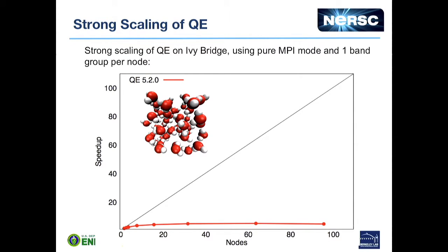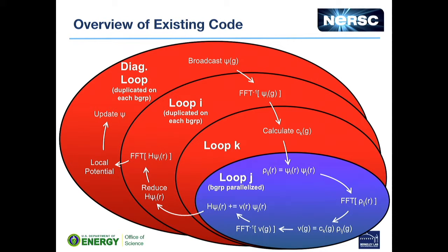That having been said, there are some limitations to the way band group parallelization currently works in Quantum Espresso. For a calculation on 64 water molecules, looking at strong scaling as I use more and more nodes — with one band group per node for all calculations — beyond about 10 or so nodes, we really don't get very much. We hit a point of diminishing returns around there. So if we look into why this is and what the current limitations are, it becomes clear if we look more closely at what's going on in the code.